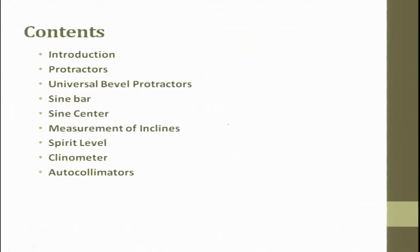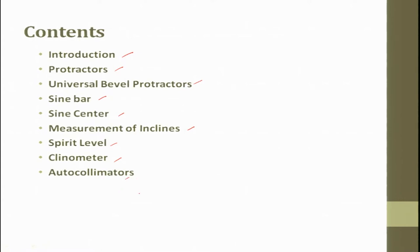In this topic we will first see the introduction, then protractors, universal bevel protractor, sine bar, sine center, measurement with inclined spirit level, clinometer, and finally auto collimator which is used for measuring precise angles on a flat surface. The angle measurement can be converted — degrees can be converted into distance, into microns, and results reported. The standard of an angle derived with relation to a circle is not manmade but exists in nature.